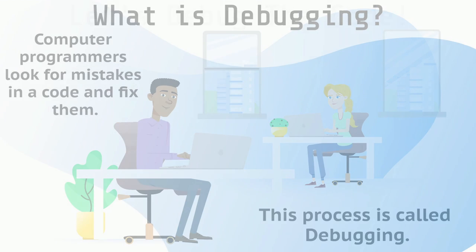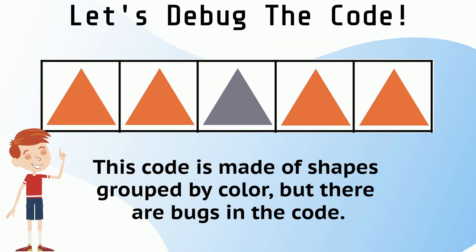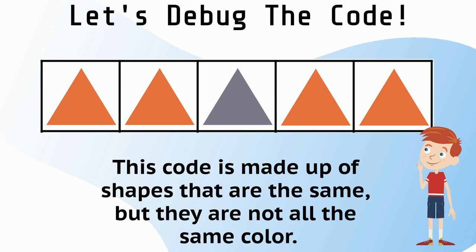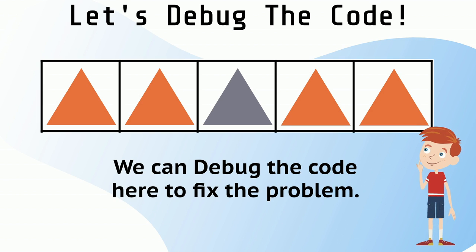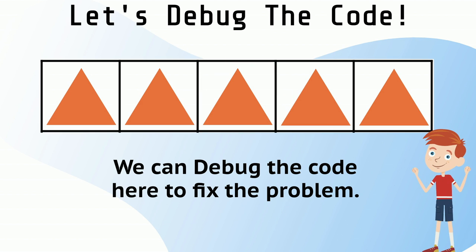Let's try it. Take a look at this code. It is made of shapes grouped by color, but there are bugs in the code. Let's fix this code together. This code is made up of shapes that are the same, but they are not all the same color. We can debug the code here to fix the problem. There — that looks better.